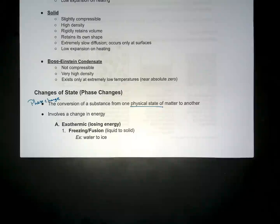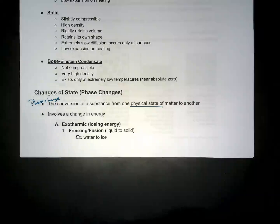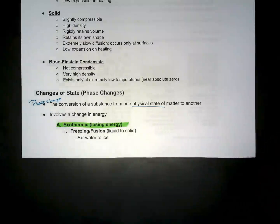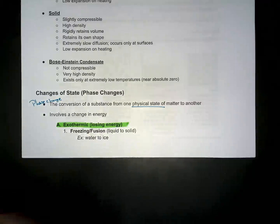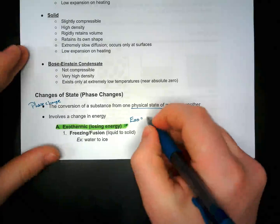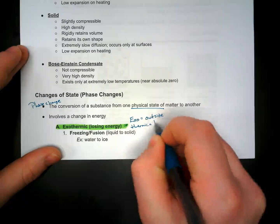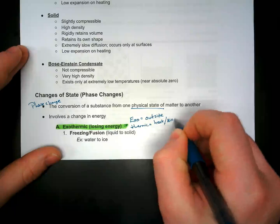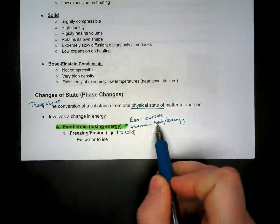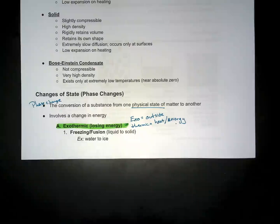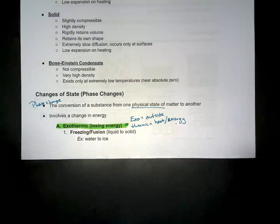We have two different types of phase changes in terms of how energy moves through them. We have exothermic reactions. An exothermic reaction just means losing energy. If you break down exothermic — exo, like exoskeletons on an insect, means outside. Thermic means heat or energy. So the energy is moving outside of the system. That's exothermic.